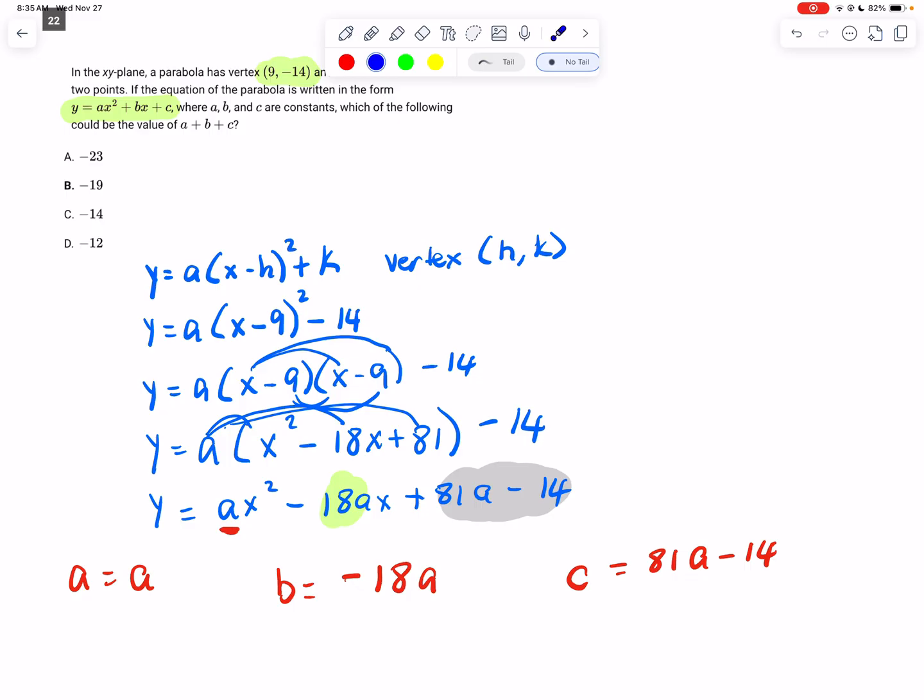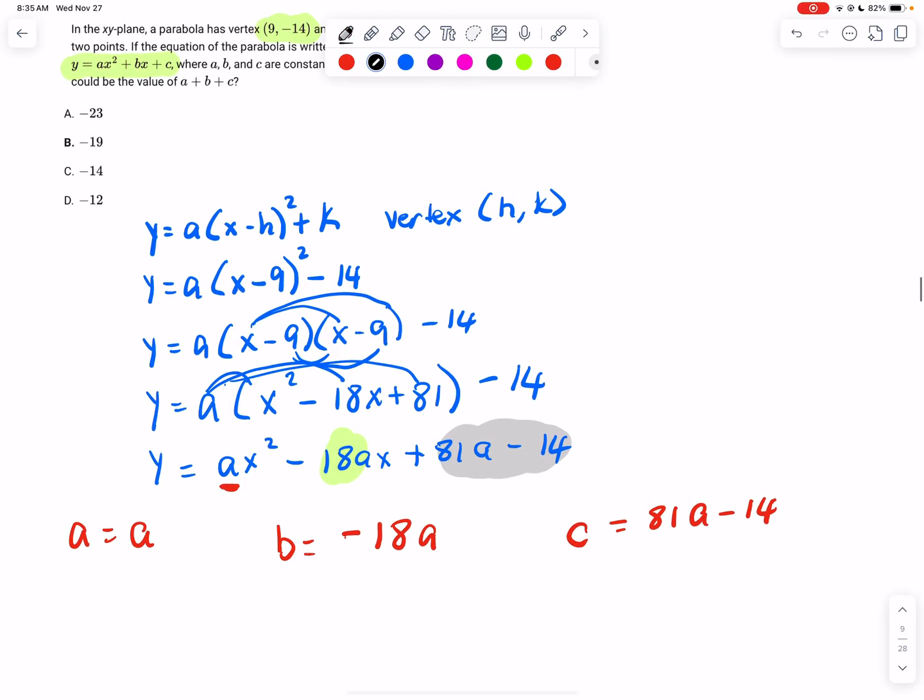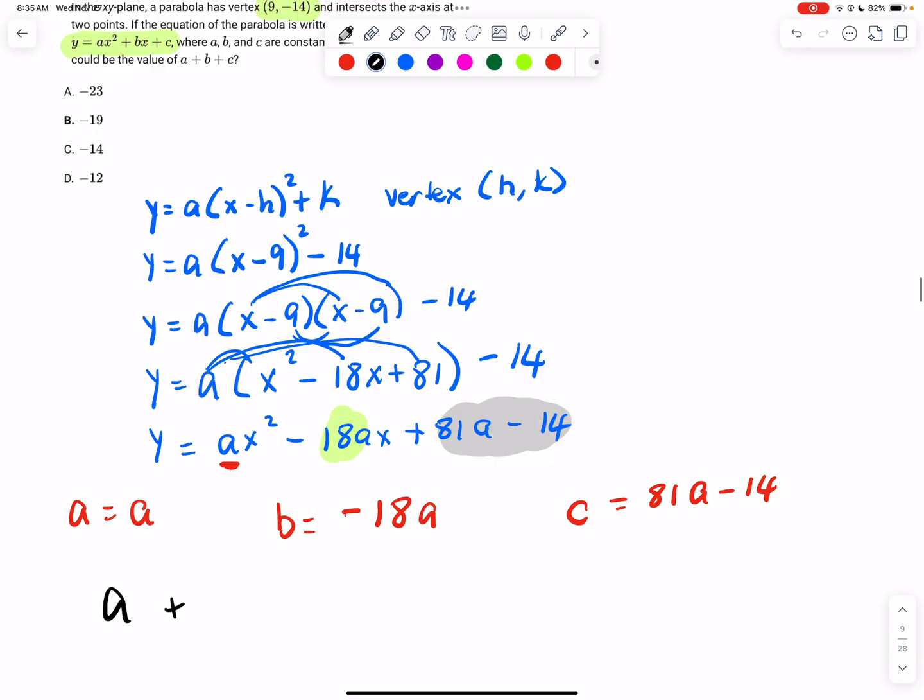Now, this is not my perfect world question, but that's okay. We're going to still keep plugging through. So a plus b plus c is going to be a plus, and then we have this, minus 18 or negative 18a. And now we have this plus 81a minus 14.